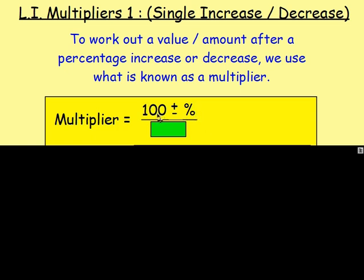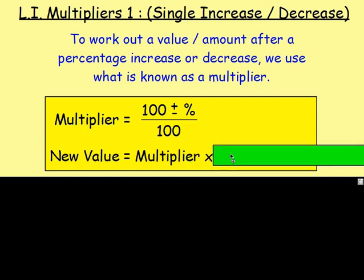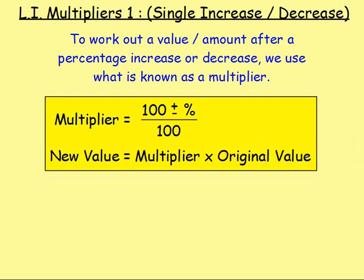Once you've worked that out — 100 plus or minus your percentage — you divide it by 100. You always divide by 100, every single time. What you can then do is work out your new value or new amount by taking your multiplier and multiplying it by the original value or the original amount.